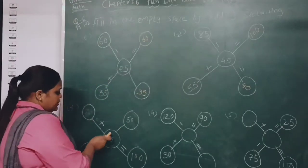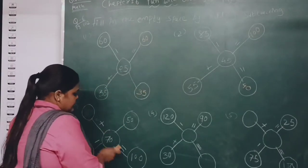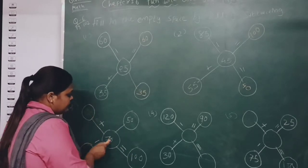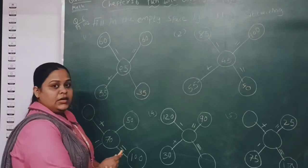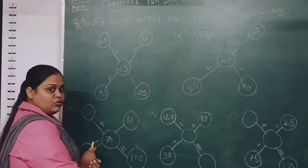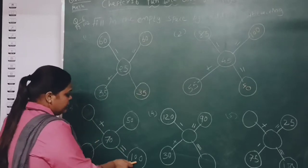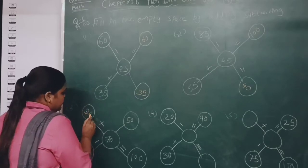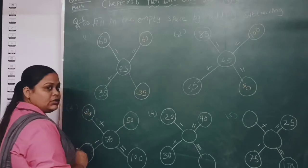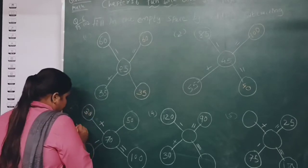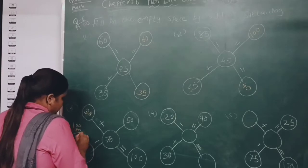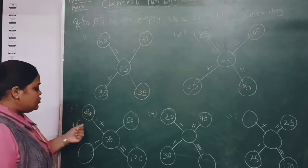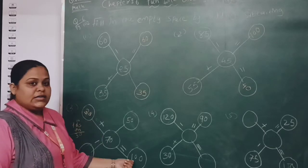Next: here 70 is given with a plus sign and 100 is the total. So what we have to do is 100 minus 70, which is 30. So the answer is 30. You can see 30 plus 70 gives 100.